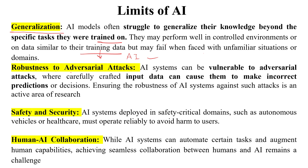The next limit is robustness to adversarial attacks. AI systems can be vulnerable to adversarial attacks, where carefully crafted input data can cause them to make incorrect predictions or decisions. Ensuring the robustness of AI systems against such attacks is an active area of research, because any such attack can cause incorrect decisions or conclusions.